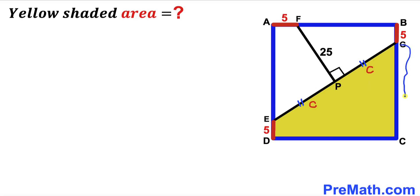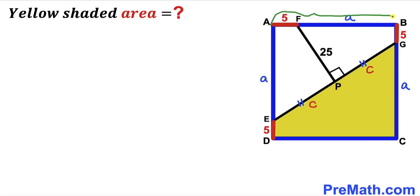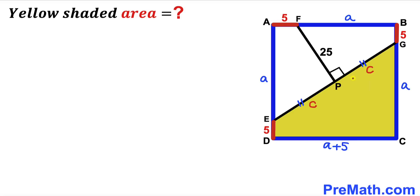Let me label length CG as 'a' units. Then by symmetry, segment CG is lowercase a, and segment BF is lowercase a as well. Therefore the whole length AB is going to be a plus 5, and the side length of the square is a plus 5 as well. Our task is to find the value of lowercase a before we can calculate the area of the yellow shaded region.